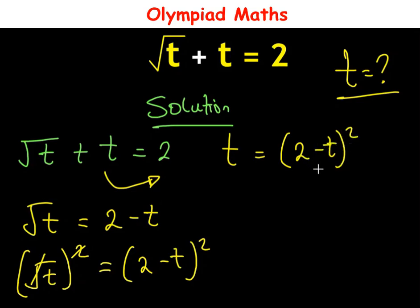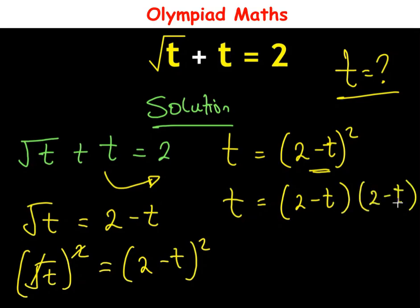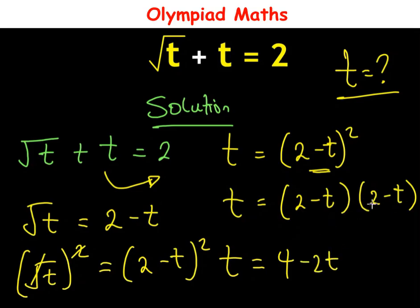From here we can write this as t = (2 - t)(2 - t), because it is all squared — so in two places. Opening the brackets: 2×2 = 4, 2×(−t) = −2t, (−t)×2 = −2t, and (−t)×(−t) = +t².